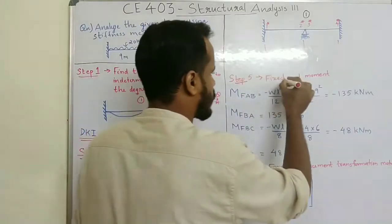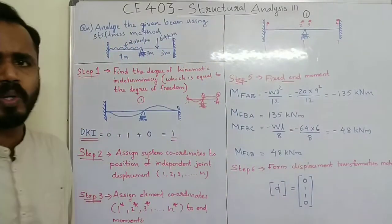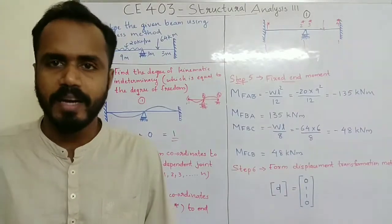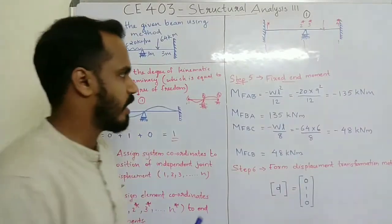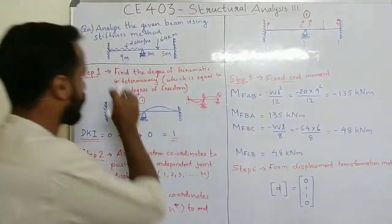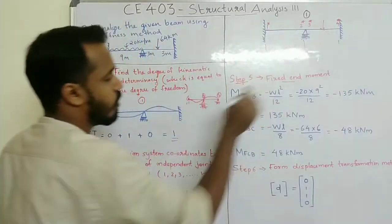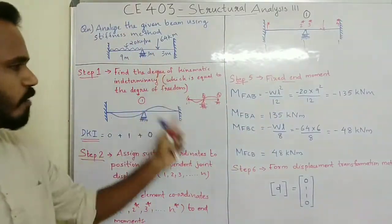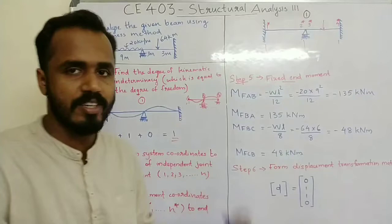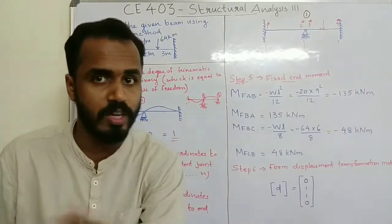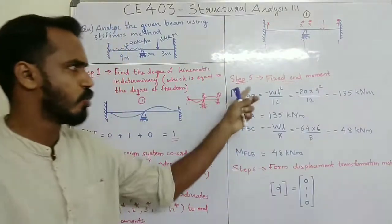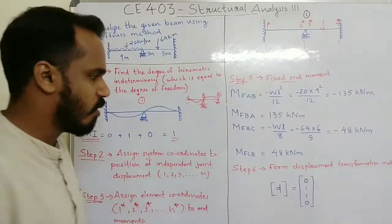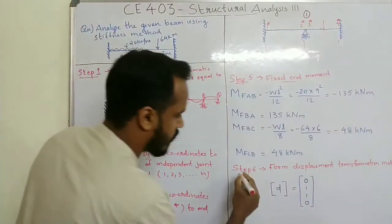Step 5 is to calculate fixed end moments. The fixed end moments are calculated using WL²/12. With W and L, the sign convention is also applied. This is Step 5 and Step 6.